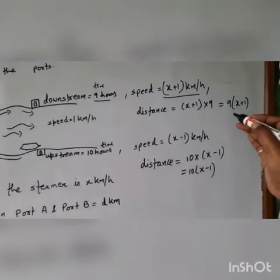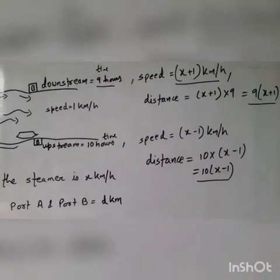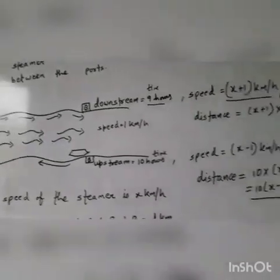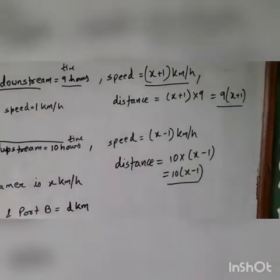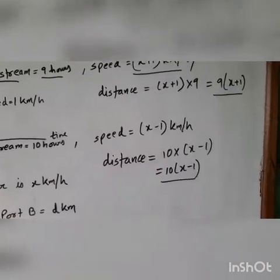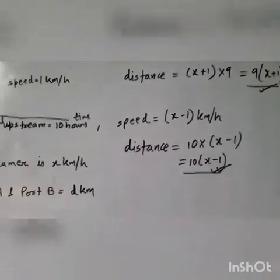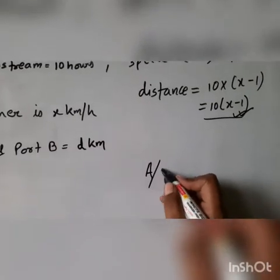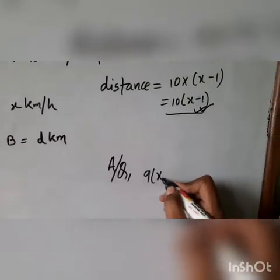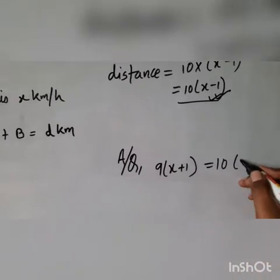So now we have this data. We have the distance downstream and the distance upstream. But according to question these both distances are same. The question says the same distance is covered downstream in 9 hours and upstream in 10 hours. So we can say this distance is also equal to this distance. According to question, 9(x + 1) equals 10(x - 1).